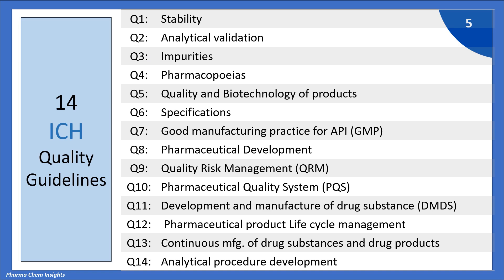First is Q1 for stability, Q2 for analytical validation, Q3 for impurities, Q4 for pharmacopeias, Q5 for quality and biotechnology of products, Q6 for specification, and Q7 for good manufacturing practice for APIs.